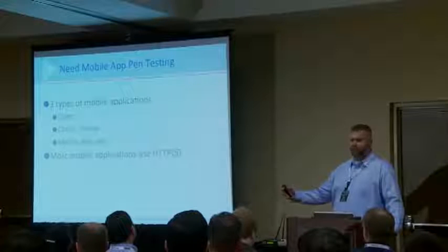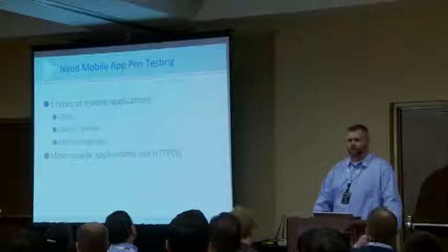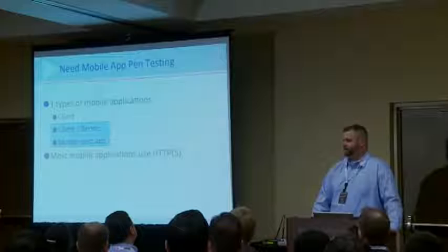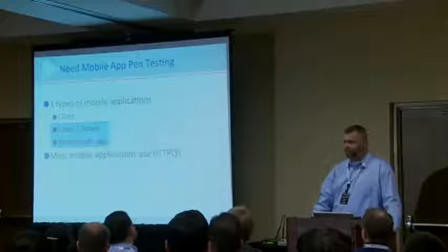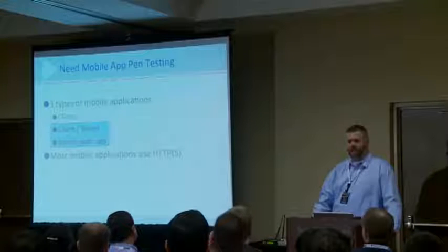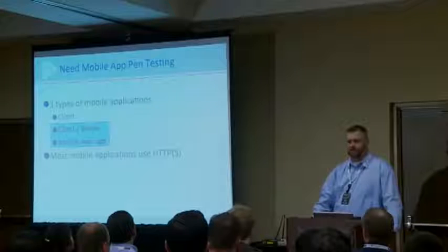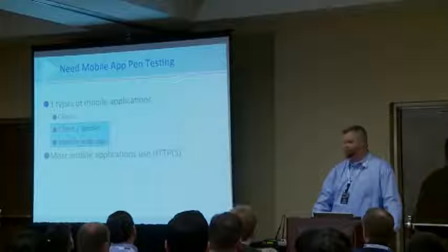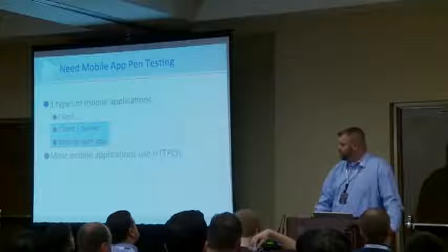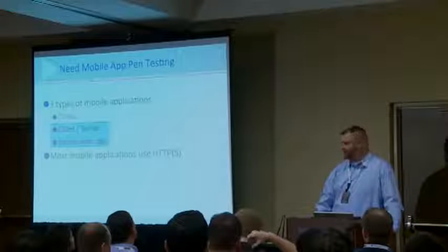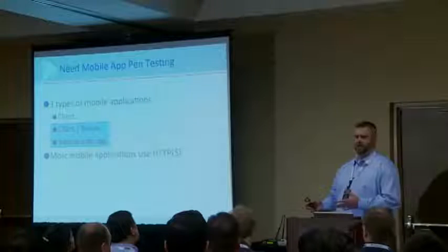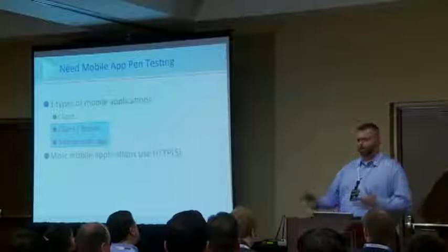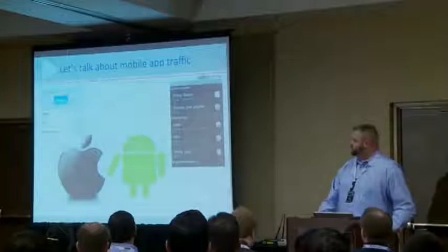So there are three types of mobile apps: client, client-server, and mobile web apps. Today's talk is really going to focus on the traffic. Most of the apps that we look at and pen test utilize HTTP or HTTPS, and there are definitely issues when it comes to trying to proxy these apps — more so on the Android side than iOS. But there are also some things on iOS we've seen recently. We shouldn't be spending two days just to look at the traffic of an application — the point is to secure the app quickly.